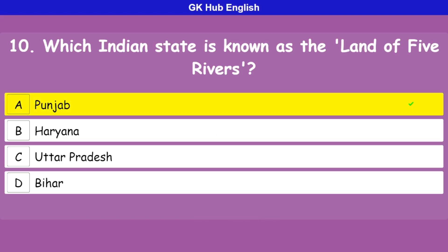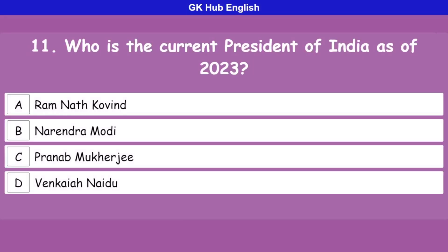Question 11: Who is the current president of India as of 2023? Option A is Ram Nath Kovind, option B is Narendra Modi, option C is Pranab Mukherjee, option D is Venkaiah Naidu. Correct answer is Ram Nath Kovind.